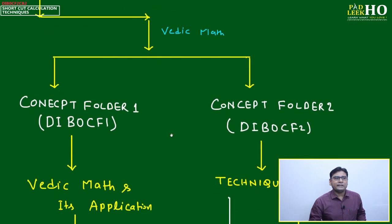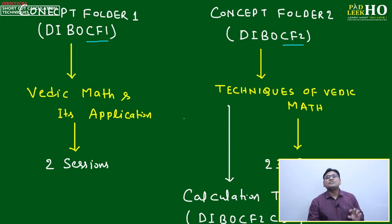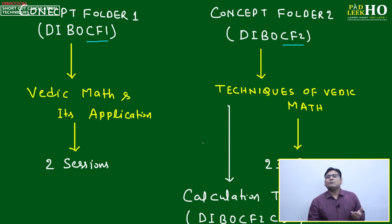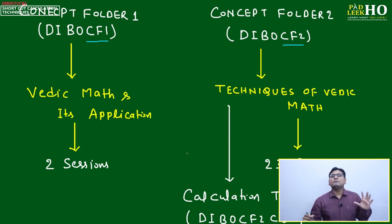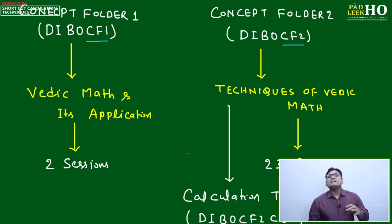DIB0 is divided into two folders: CF1 and CF2. CF1 deals with the general application of basic math, and CF2 discusses all techniques related to Vedic math — whatever is covered in the Vedic math sutras. There are actually only 16 sutras in the original Vedic math book, written by Shankaracharya of Puri Math. He planned to write 16 volumes — one book per sutra — but only the first volume was completed.